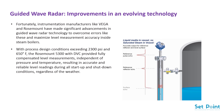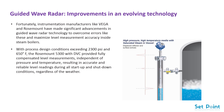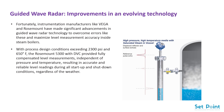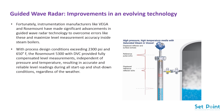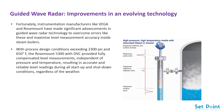When high-pressure saturated steam is added, both the reflected pulse and the surface pulse have been displaced due to the slower travel speed of the microwave pulses in the presence of steam. Because the transmitter knows exactly where the reflector is, the distance the reflector pulse has been displaced can be used to calculate how much compensation is needed. It then determines the correct distance to the surface pulse and outputs the correct level.